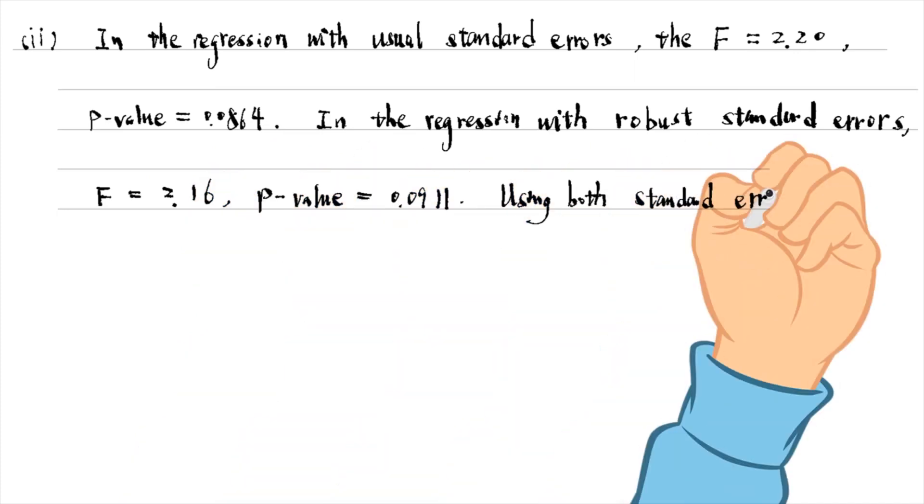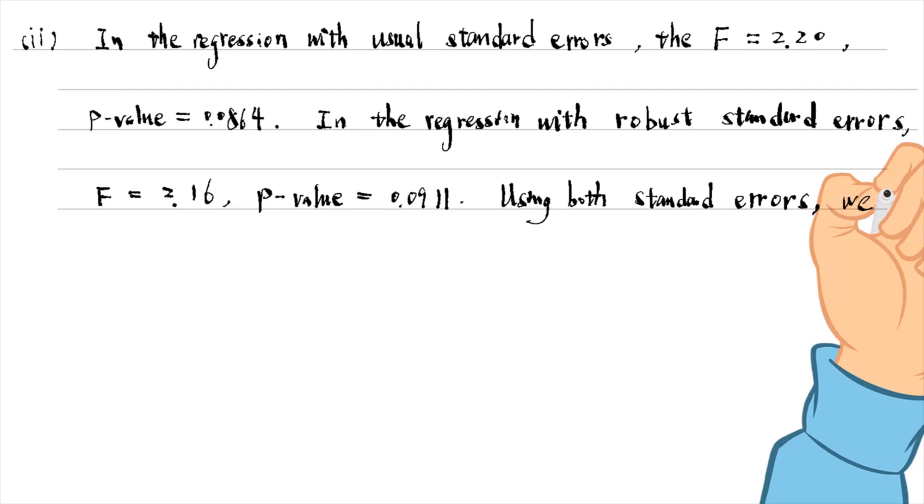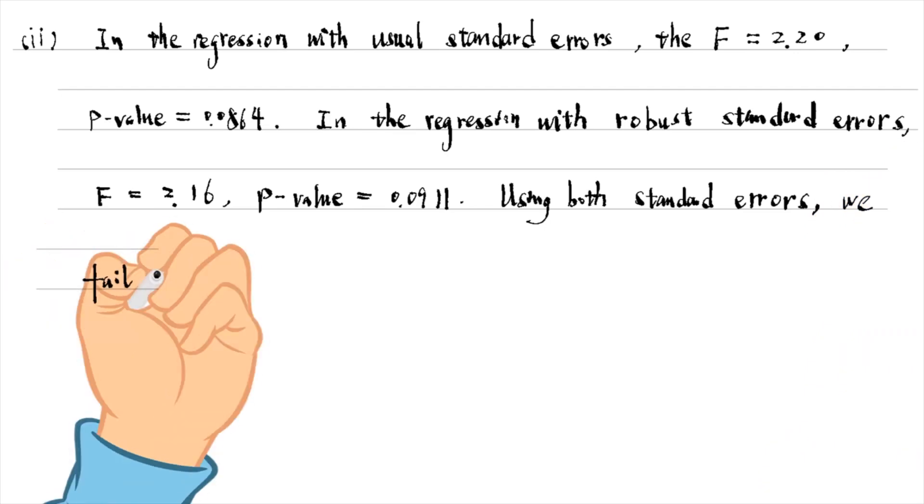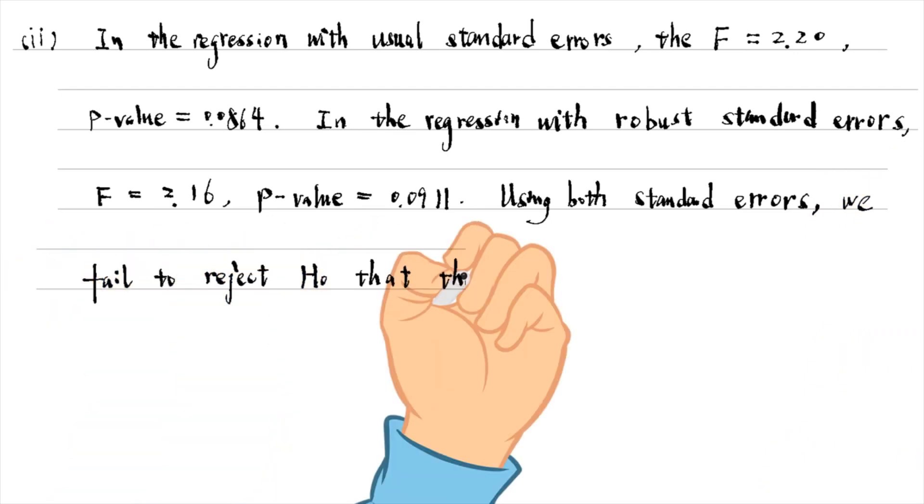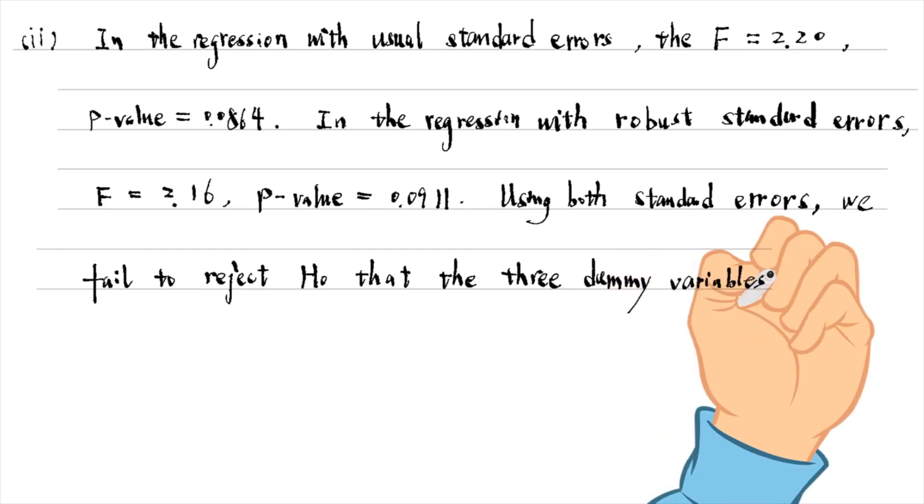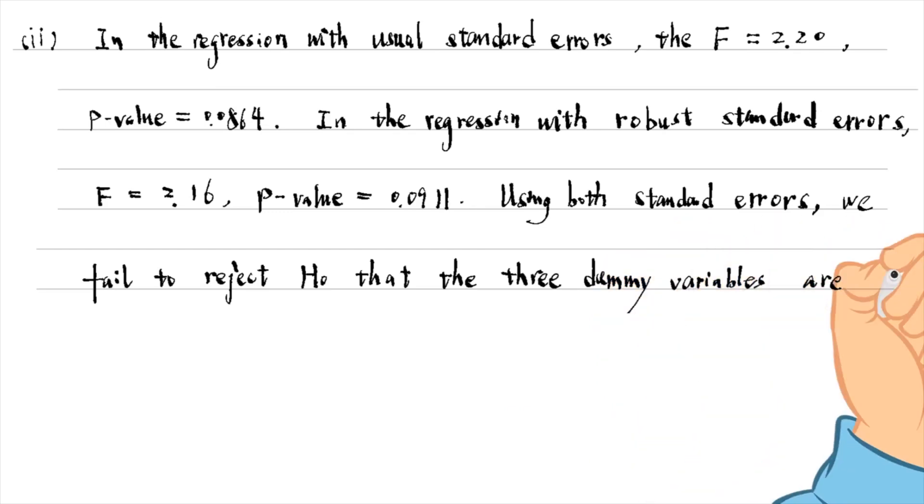Using both standard errors, we could not reject the null hypothesis that the three dummy variables are jointly insignificant at the 5% level against a two-sided alternative.